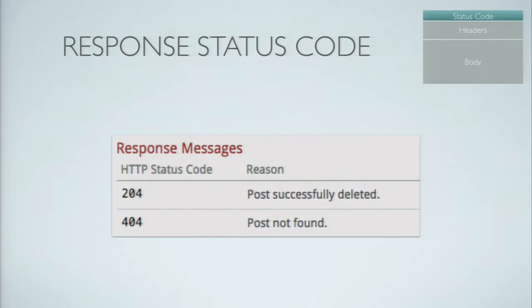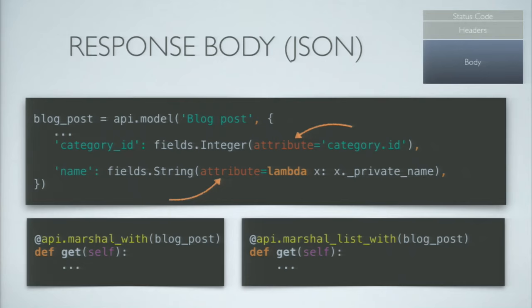That's what a table of documented responses looks like. The last part of a response I'm going to talk about is the body. You use the same API models to format the output of your API methods, so you can actually use them both for validating input and formatting output.